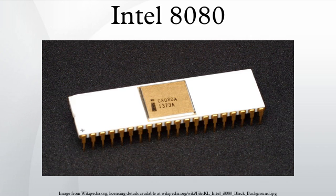Shortly after the launch of the 8080, the Motorola 6800 competing design was introduced, and after that the MOS Technology 6502 variation of the 6800. Zilog introduced the Z80, which had a compatible machine language instruction set and initially used the same assembly language as the 8080, but for legal reasons Zilog developed a syntactically different alternative assembly language for the Z80.